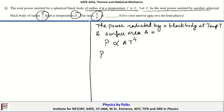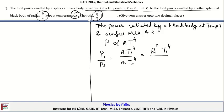Therefore, for the given condition we have to find the ratio P1/P2. So P1/P2 is equal to A1·T1^4 upon A2·T2^4. Since the surface area is proportional to radius squared, that means it is equal to R1²·T1^4 upon R2²·T2^4.